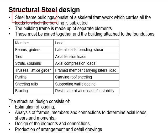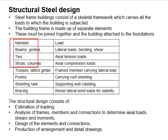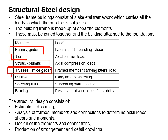A steel frame building consists of a skeleton framework which carries all the loads to which the building is subjected. The building frames are made of separate elements which are joined together, forming the skeleton frame for a building. Typical members in a steel building include beams, girders, ties, struts, columns, trusses, lattice girders, purlins, sheeting rails, and bracing.